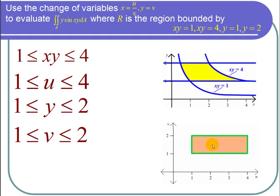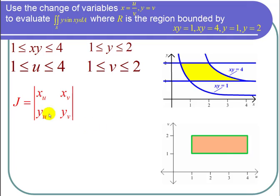So now let's find the Jacobian. Remember the formula for the Jacobian is the determinant of the matrix of partial derivatives: x_u, x_v, y_u, and y_v.